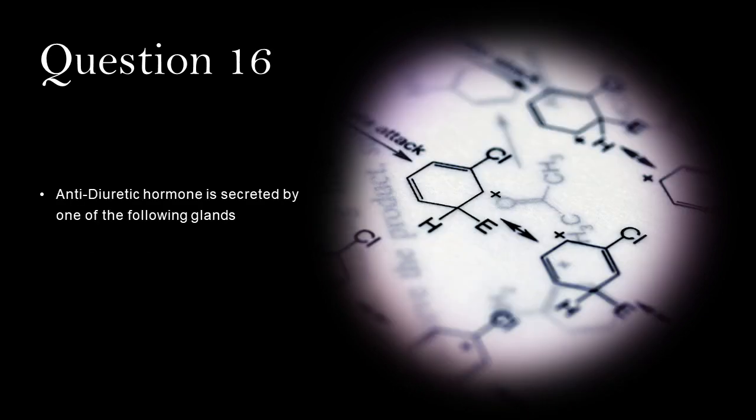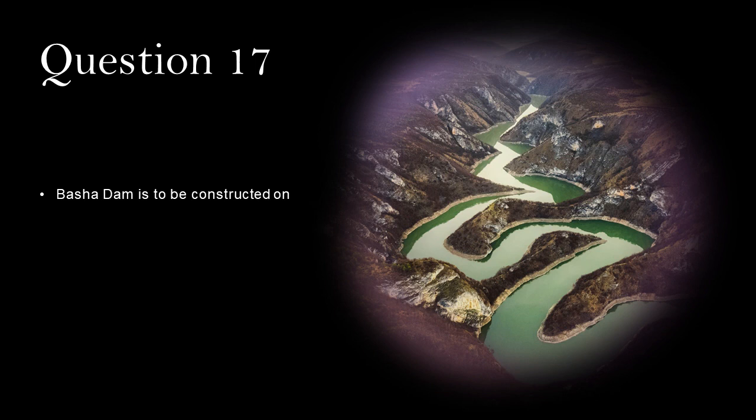Anti-diuretic hormone is secreted by one of the following glands: Pituitary. Basia dam is constructed on river Indus.